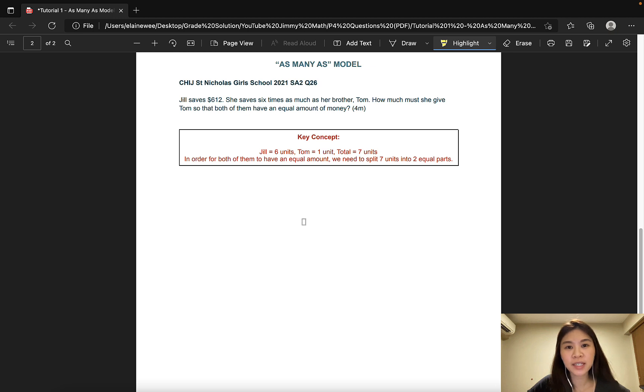The next question is taken from CHIJ St Nicholas Girls School and it is worth 4 marks. Jill saves $612. She saves 6 times as much as her brother, Tom. How much must she give Tom so that both of them have an equal amount of money? The key word is of course 6 times as much as that puts Jill at 6 units and her brother Tom at 1 unit. So let's go ahead and draw the model and then decide how we can split them into two equal parts.